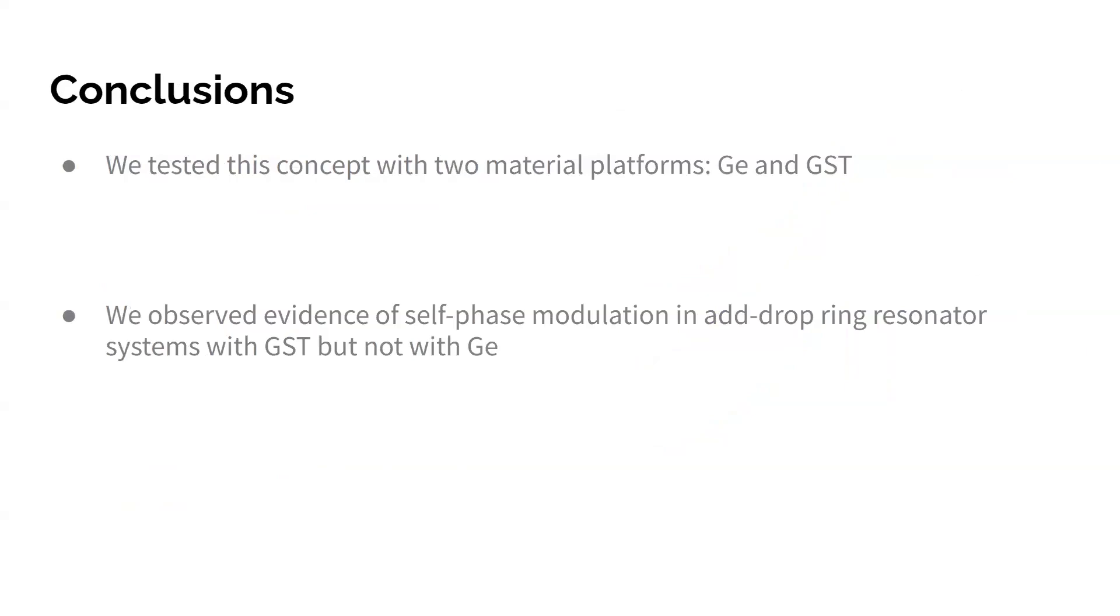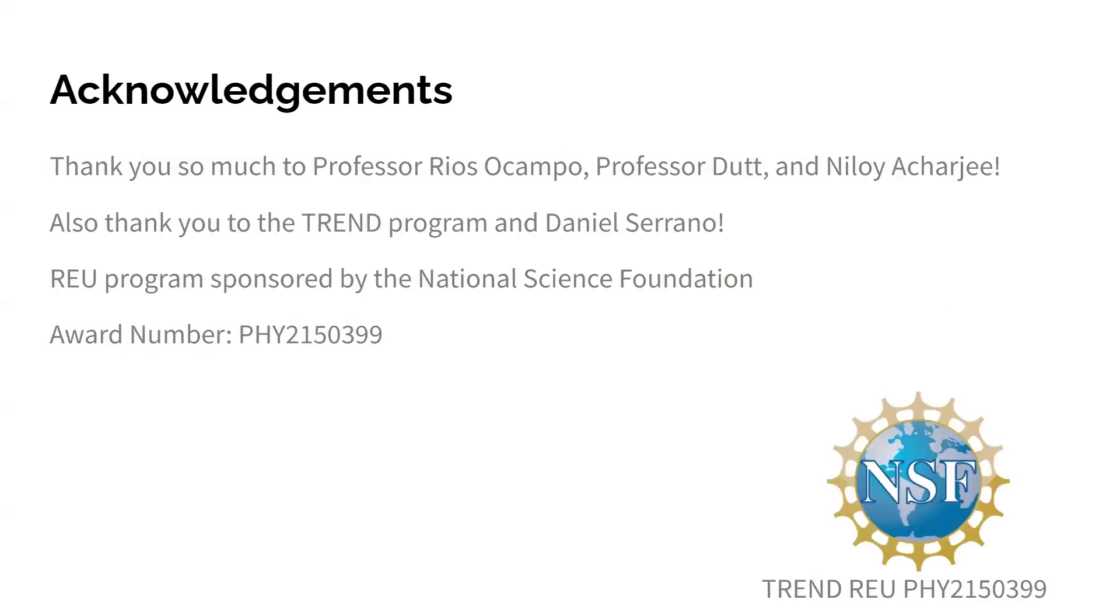So just to wrap this up, we tested the concept of thermo-optic self-phase modulation with two material platforms, germanium and GST. And we observed evidence of it in add-drop ring resonator systems with GST, but not with germanium. Possible reasons for this are that germanium just has a lower absorption and a lower thermo-optic coefficient than GST. So in the future, we know we should fabricate devices with GST instead of germanium. In addition, we saw that the effect we saw in ring resonators was rather weak, so we could look into fabricating different types of resonator devices that would have a stronger shift in resonance wavelength. So I would just like to thank my mentor, Professor Reza Kambo, as well as Niloing, who's the grad student I worked with, and everyone involved with the TREND program. Thanks so much for listening.